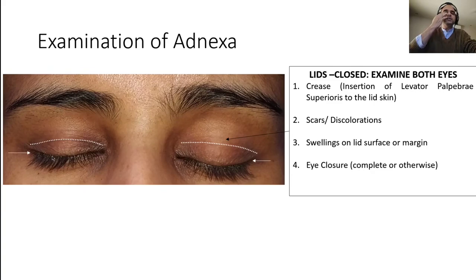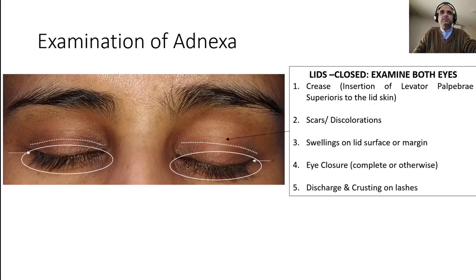Finally, check whether the eyes are completely closed — you should not see any of the eyeball when eyes are closed. In thyroid eye disease (Graves' ophthalmopathy), the eyes may not close properly. So assess eye closure. Again, look for discharge and crusting on the lashes. In summary with eyes closed: lid crease, scars and discolorations, swellings on the surface and margin, eye closure, and discharge or crusting.